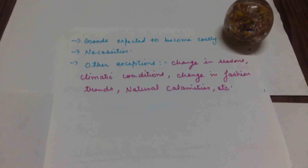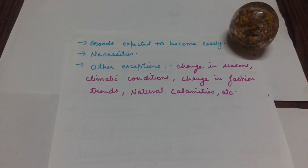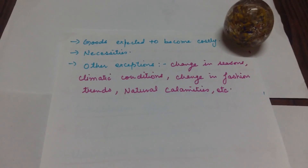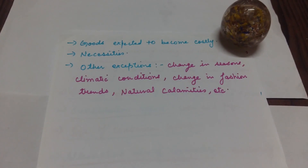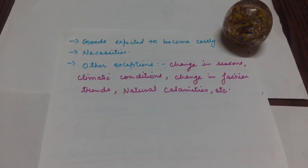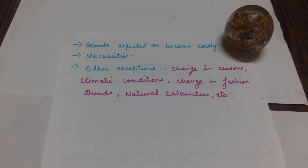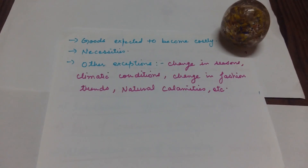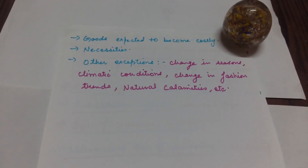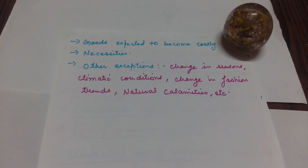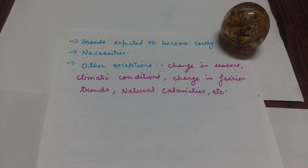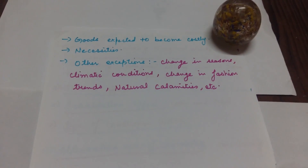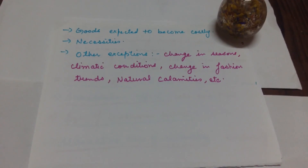Goods expected to become costly: if you think in the future the price of some goods will increase, you will buy more of those goods now even at the increased price. Necessities — for example milk and electricity — you have to buy them regardless, whether the price is increased or decreased, because you depend on those commodities. Other exceptions include change in seasons, climatic conditions, natural calamities, etc.